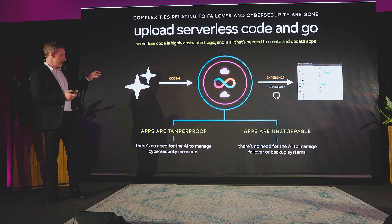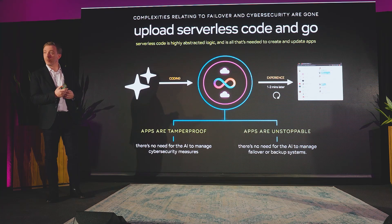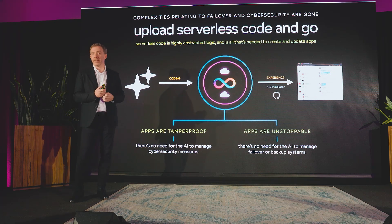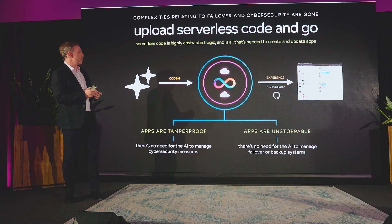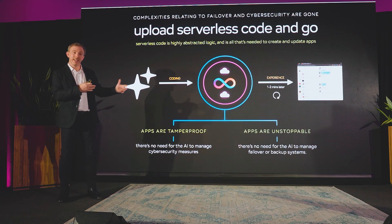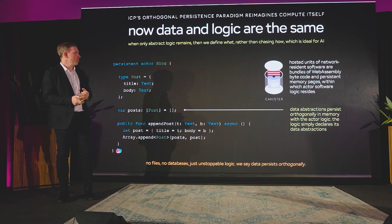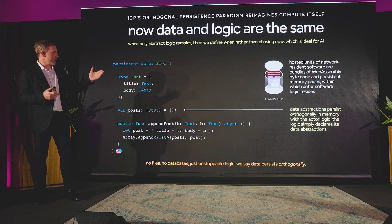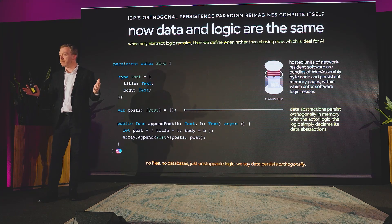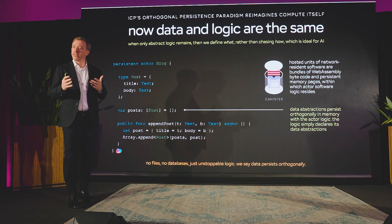The AI can just code, upload this serverless code, and a short while later you've got this experience made available. These apps are tamper-proof, meaning they don't need protecting by cybersecurity — they're immune to traditional cyber attack and unstoppable, so the AI doesn't have to manage failover and backup in the same way. The code that AI writes and uploads to Internet Computer Protocol platforms is very highly abstracted, which is ideal for AI. On Internet Computer Protocol platforms, networks, logic, and data are now essentially the same — a big innovation called orthogonal persistence.